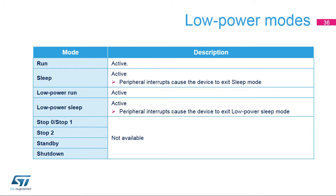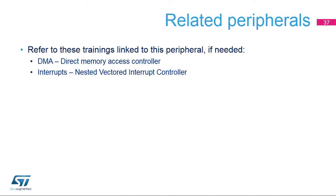The Cordic unit is active in run, low power run, sleep, and low power sleep modes. It is not available in the other low power modes. These peripherals may need to be specifically configured for correct use with the Cordic block. Please refer to the corresponding peripheral training modules for more information.